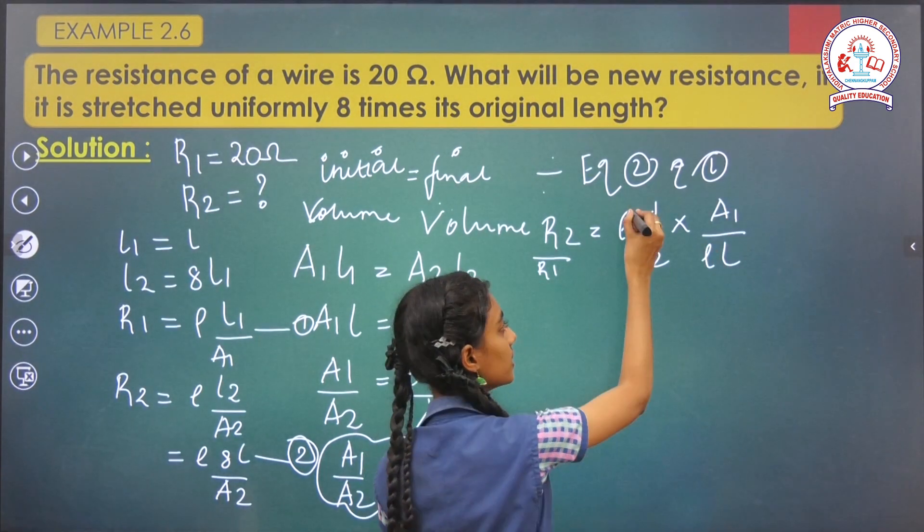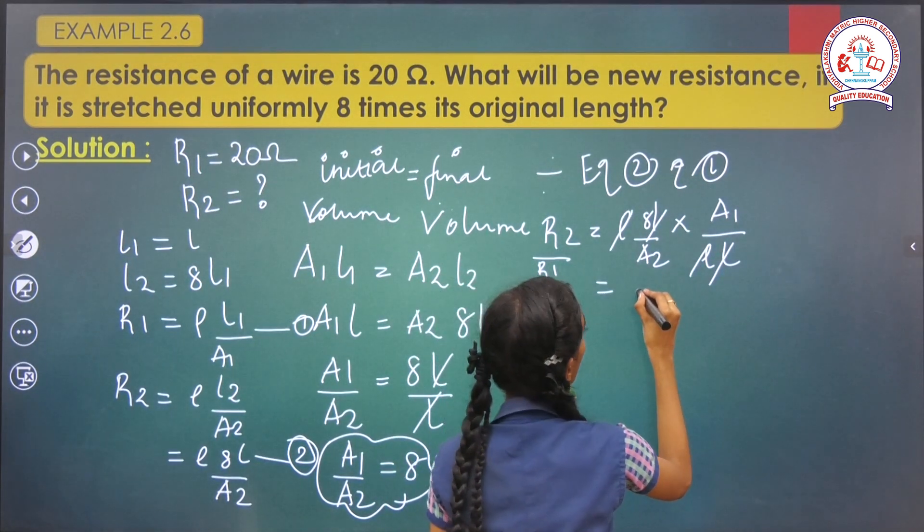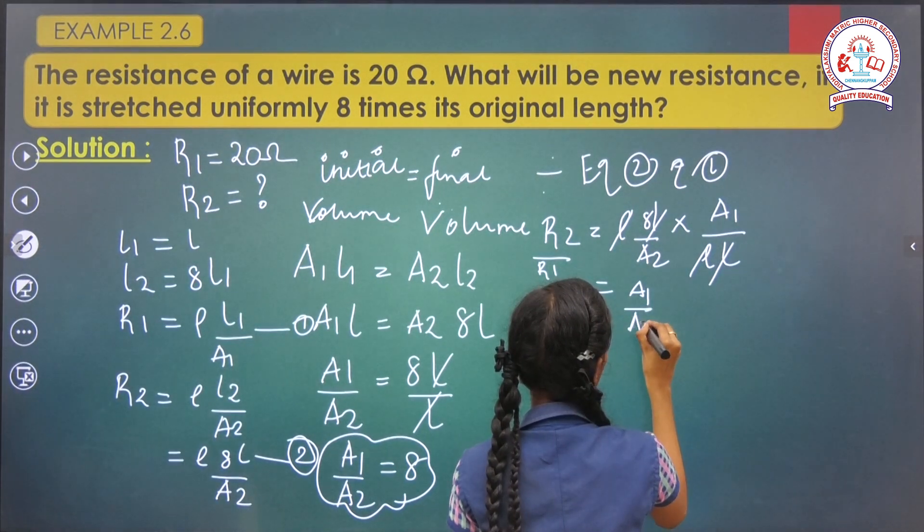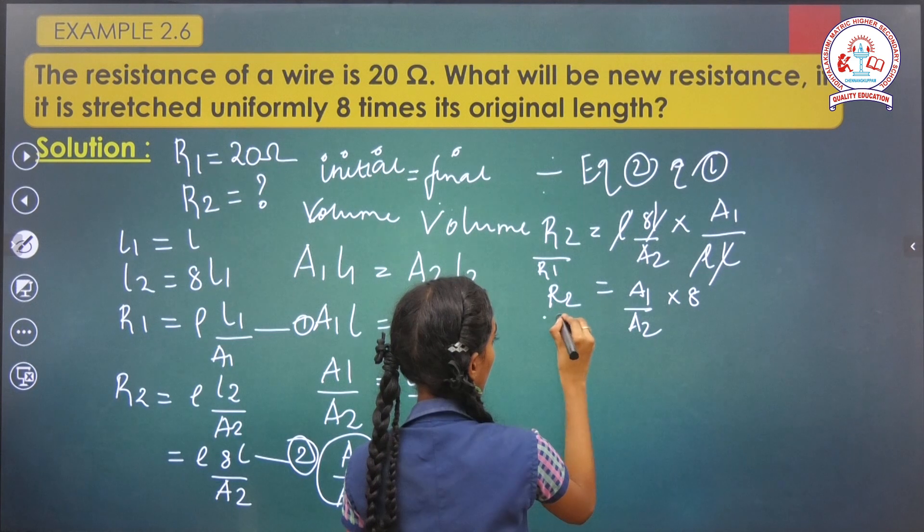Similar terms get cancelled with each other. A1 by A2 into 8, which is R2 by R1.